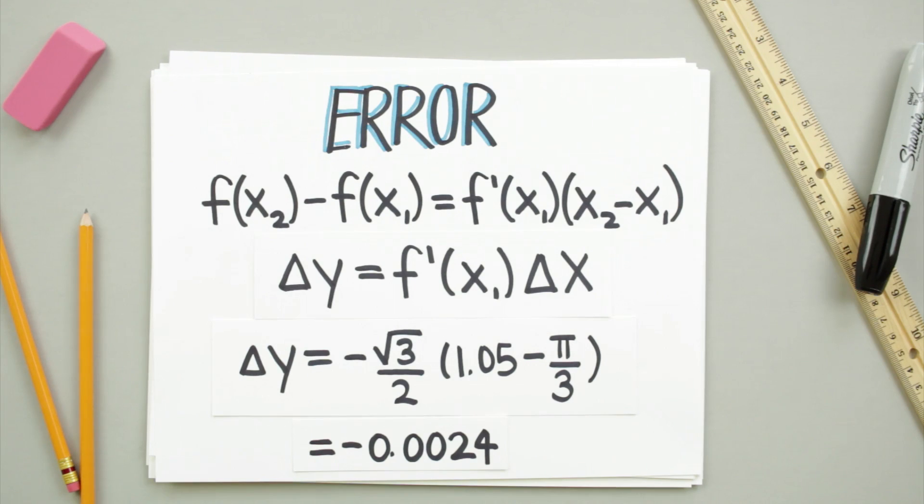Keep in mind that you can get both positive and negative values for the error of a linear approximation, but since we're looking at error, which is just the distance between the actual value and the approximation value, you can always give a positive value for error. So in this case, we take the absolute value of 0.0024 and say that the error of the linear approximation is positive 0.0024.